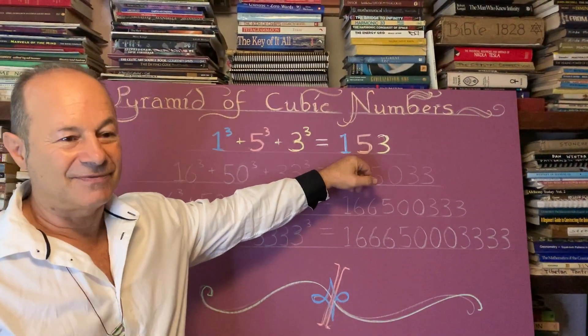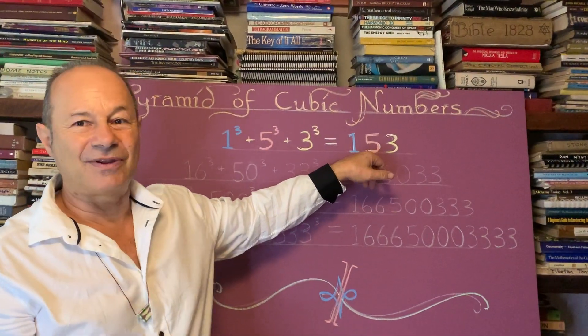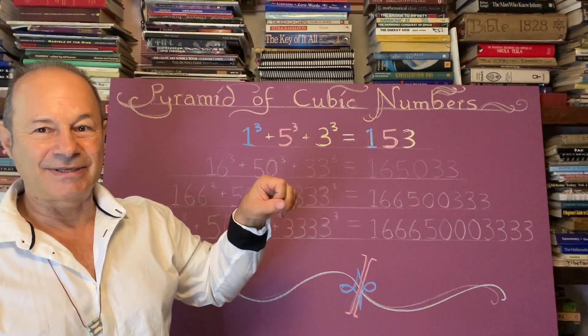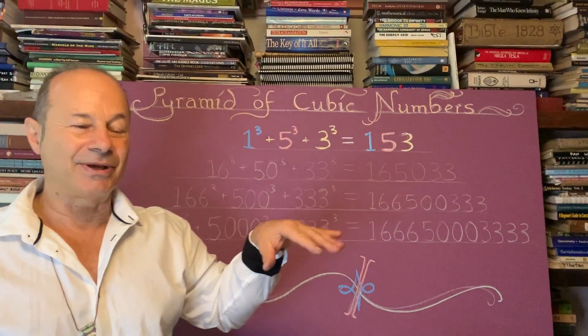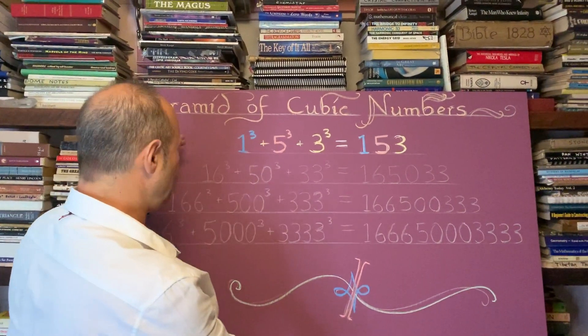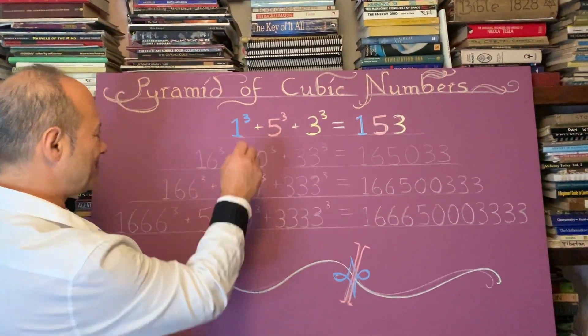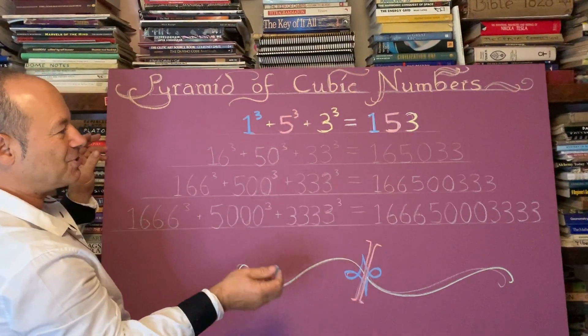And it's also, for those who've studied Bible mathematics, 153 fishes is a very symbolic parable in the Christian Bible. So I'm going to continue this to show you what happens, because the array of symmetry keeps extending.